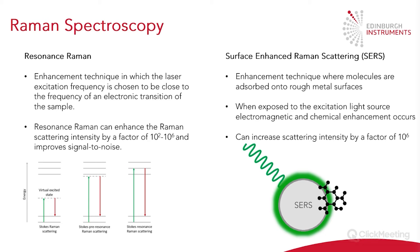Typically, gold and silver are the two most commonly used nanoparticles for SERS. Additionally, resonance Raman and SERS can be combined to create surface-enhanced resonance Raman scattering. This additional enhancement means that not only do we get the enhancement from resonance Raman and SERS, but we also see the reduced quenched fluorescence that the SERS substrate offers. So this is a great way to use resonance Raman without having the issue of fluorescence.